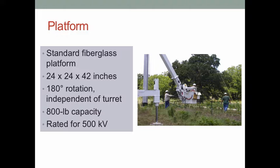The standard fiberglass platform on the CTA-104 is 48 by 24 by 42 inches. The platform is equipped with a 180-degree rotation capability, independent of turret rotation. Standard platform capacity is 800 pounds. The unit is rated for 500 kilovolts, Category A ANSI A92.2-2001.